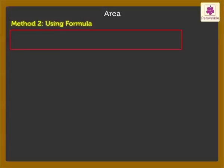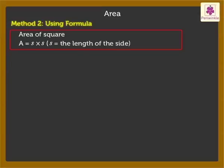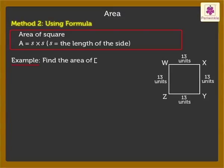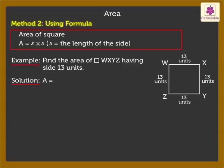The formula to find the area of a square is different. It is A = S × S, where S is the length of the side of the square. Let's find the area of square WXYZ having side 13 units using the formula: area = side × side.